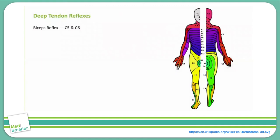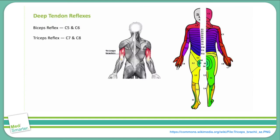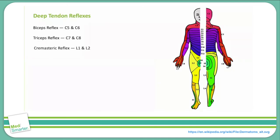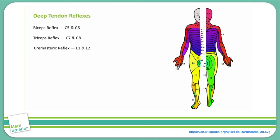The triceps reflex causes the arm to straighten when you strike the triceps tendon, corresponding to the C7 and C8 level. The cremasteric reflex is observed when you stroke the inner thigh and the testicle on that side is pulled upward toward the inguinal canal. It traces back to the L1 and L2 spinal level, used to assess lumbar spine nerves, though it can only be performed in male patients.